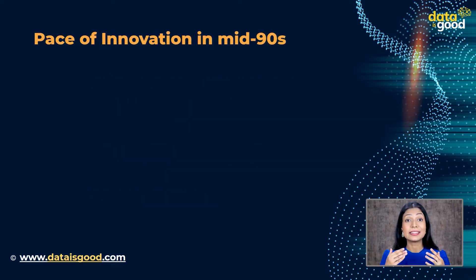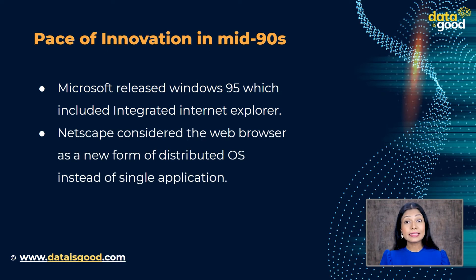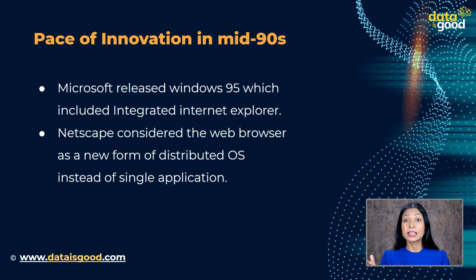Just consider the stakes — the pace of innovation in the mid-90s was intense. Microsoft had just released Windows 95, which included an integrated Internet Explorer that posed a serious threat to Netscape. Netscape considered the web browser as a new form of distributed OS, not a single application. The problem was that HTML was insufficient for the functionality they envisioned, so they needed a new language fast. His success with JavaScript came down to a simplified object model that combined the best features of Java, C, Smalltalk, and Lisp.